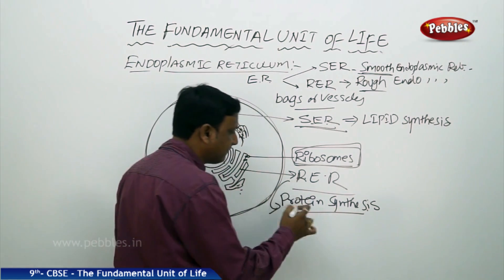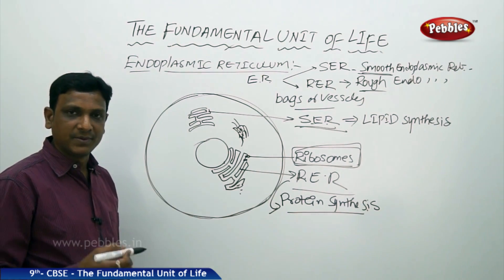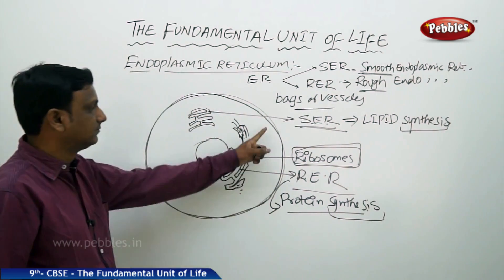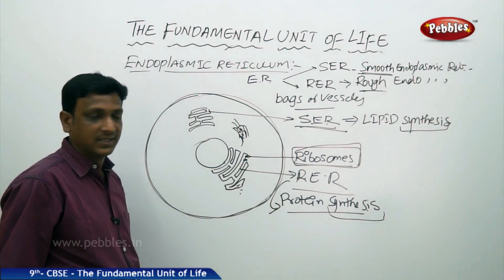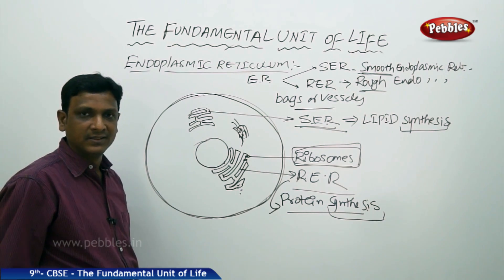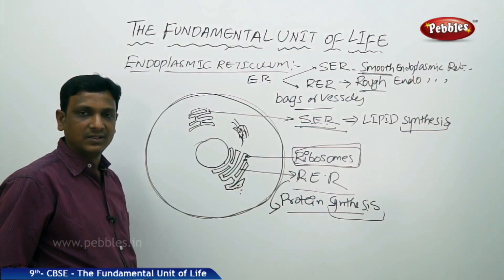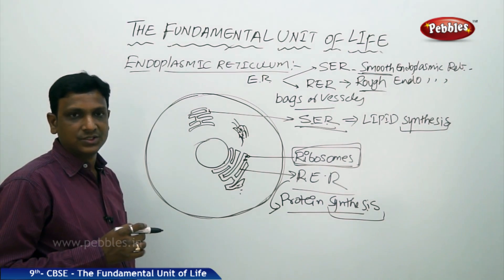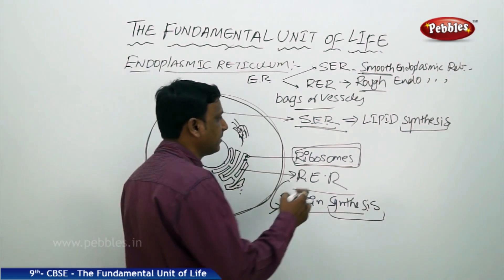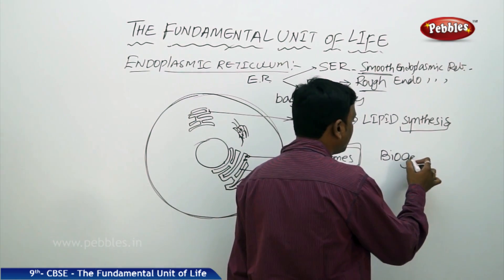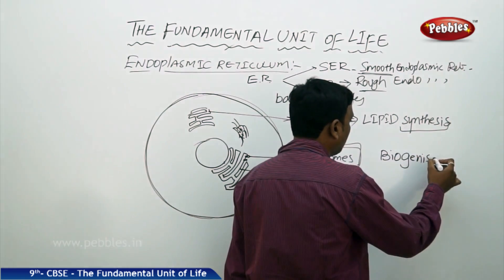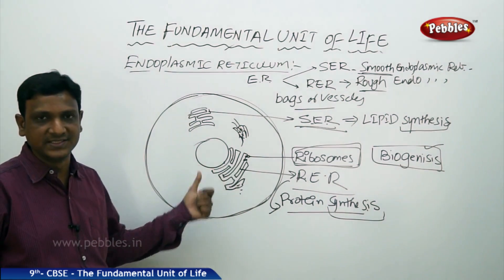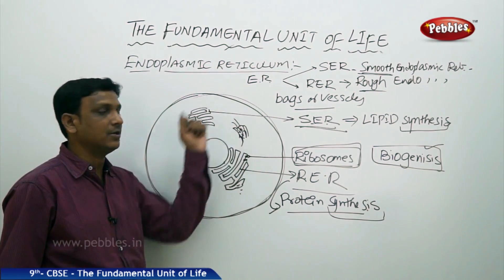Rough endoplasmic reticulum manufactures proteins, and the preparation of materials is termed as synthesis. SER and RER produce lipids and proteins respectively. These are needed because, as we studied when discussing the plasma membrane, it is made up of lipids and proteins. The preparation of lipids and proteins for the formation of the cell membrane is termed as biogenesis, and it takes place in the endoplasmic reticulum.